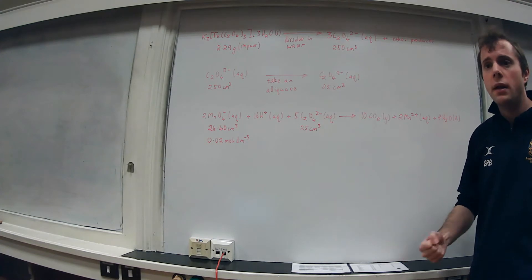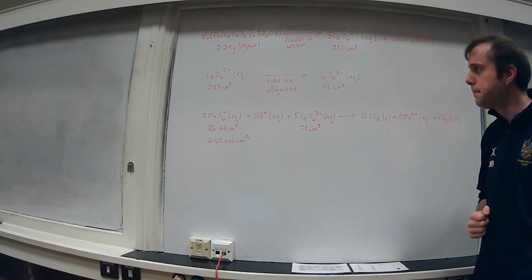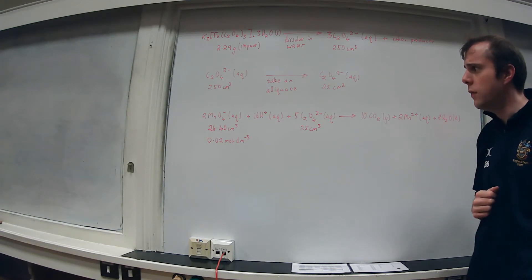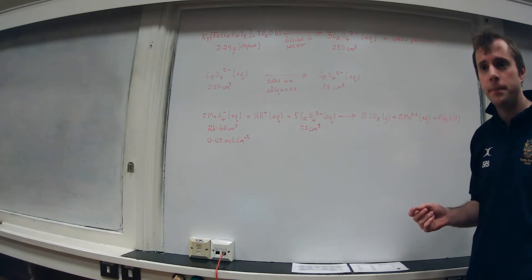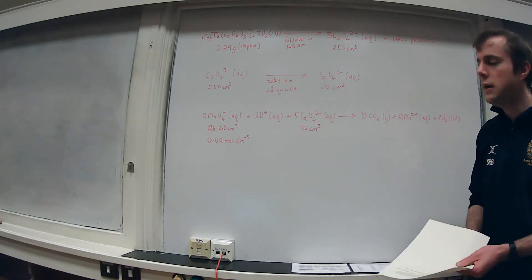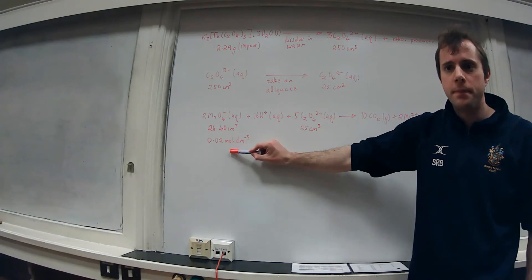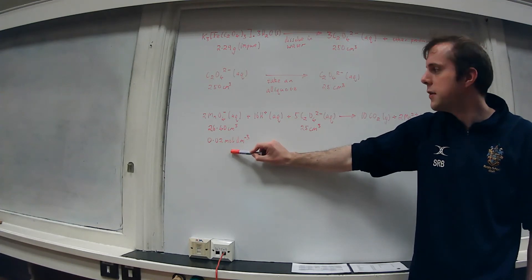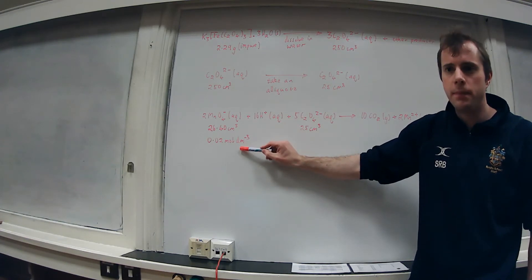At this point we can start to actually do the calculation, and really what you're looking for is two pieces of information about the same chemical. In this case, that obviously appears there with the permanganate, so we know a volume and we know a concentration, and from GCSE you know that we can work out the moles.